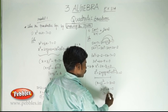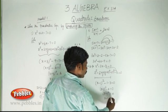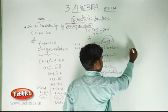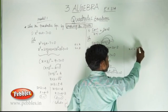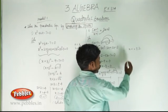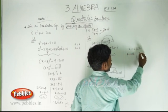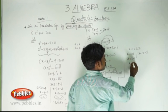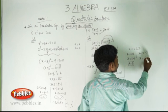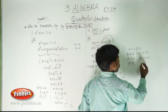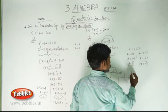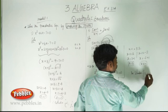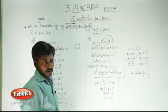So (x minus 1) whole squared is equal to 4. Then x minus 1 is equal to root of 4, so x minus 1 is equal to plus or minus 2. Case 1: x minus 1 is equal to plus 2, so x is equal to 3. Case 2: x minus 1 is equal to minus 2, so x is equal to minus 1. Therefore, the solution set is {3, minus 1}. Thank you.